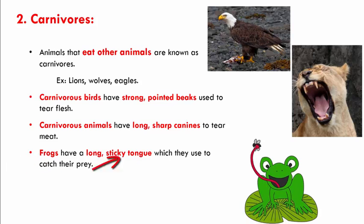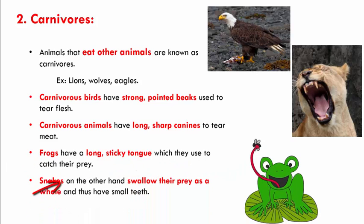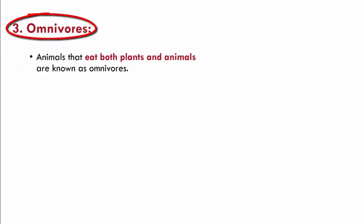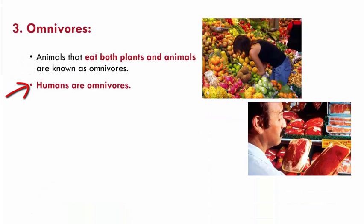Frogs have a long sticky tongue which they use to catch their prey. Snakes, on the other hand, swallow their prey whole and thus have small teeth. Animals that eat both plants and animals are known as omnivores, and humans are omnivores as they eat both plants and animals.